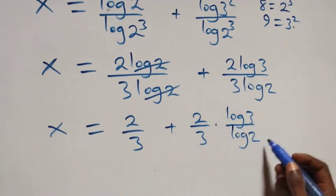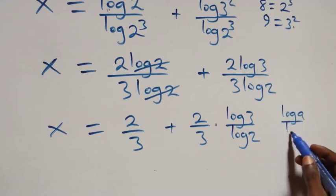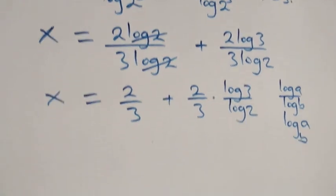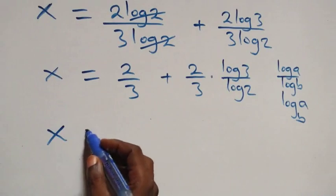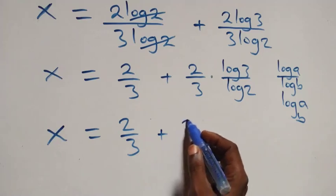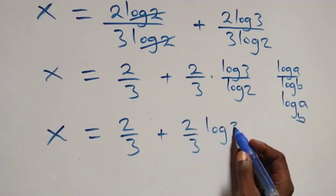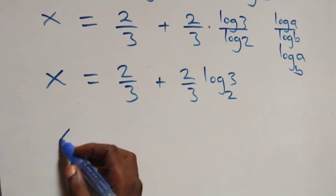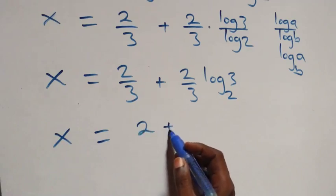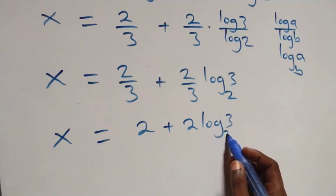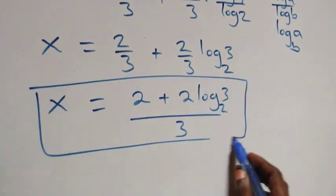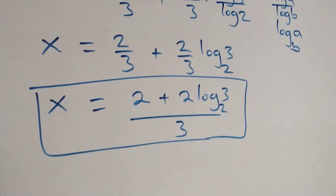When we apply change of base — when we have log a over log b, we can write this as log a to base b. Then what we have becomes x equals to 2 over 3 plus 2 over 3 log 3 to base 2. That is, we can write this as log 3 to base 2 over 3, giving us the value x equals to 2 plus 2 log 3 to base 2, all over 3.